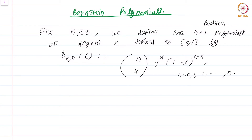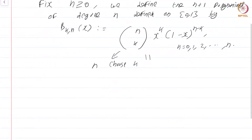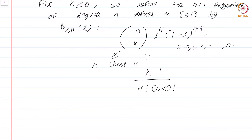Given a fixed number n in the natural numbers, there are n plus 1 polynomials, each of degree k where k runs from 0 to n. The notation n choose k, familiar from basic probability theory, is a shortcut for n factorial divided by k factorial times n minus k factorial — the number of ways to choose k objects from a set of n objects.